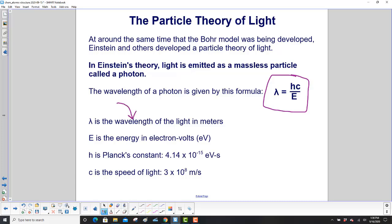Lambda is the wavelength of the light in meters. E is the energy in electron volts. H is Planck's constant, 4.14 times 10 to the minus 15 electron volt seconds. And C is the speed of light, 3 times 10 to the 8 meters per second.